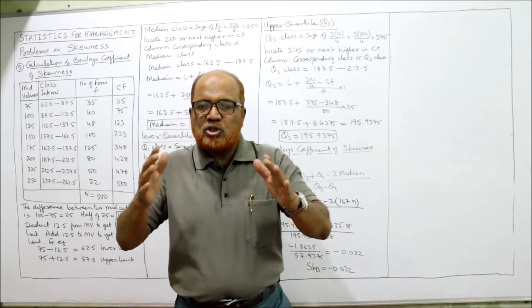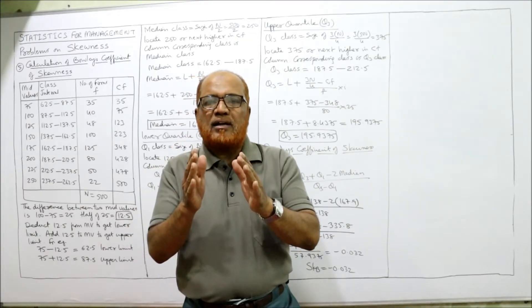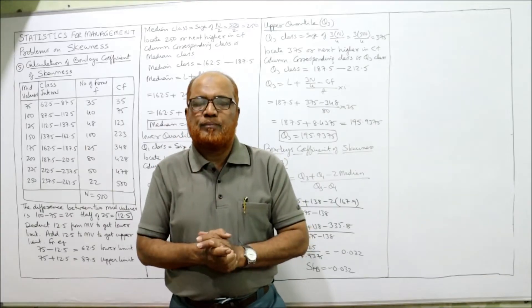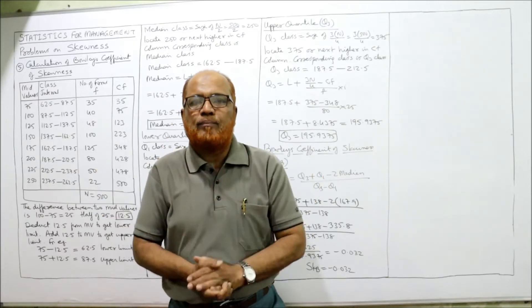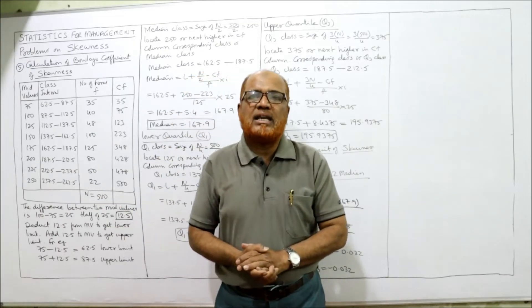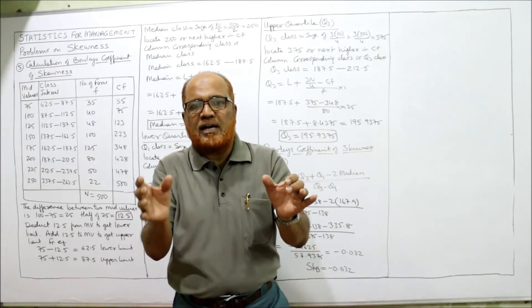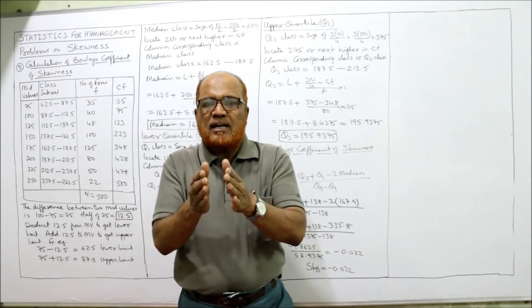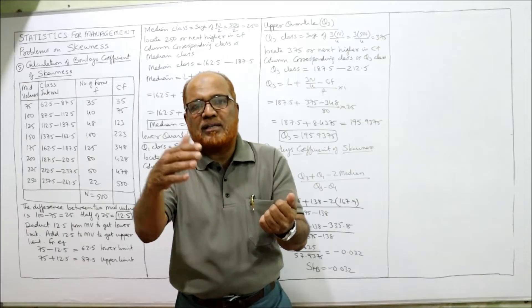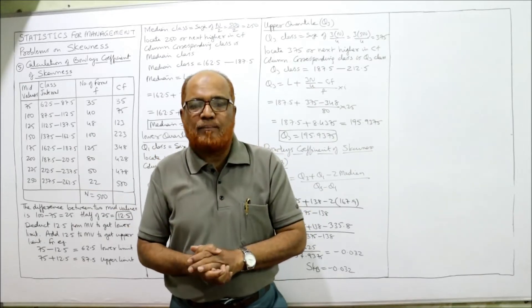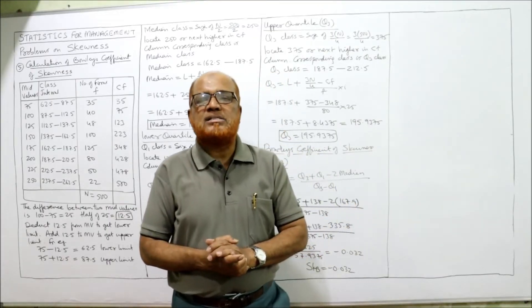Symmetrical means when an equal number of items are lying on both sides of the central value — the number of items above and below the central value are equal. Skewed or asymmetrical means on one side items are more and the other side items are less. This is called skewed data, which may be either negatively skewed or positively skewed.